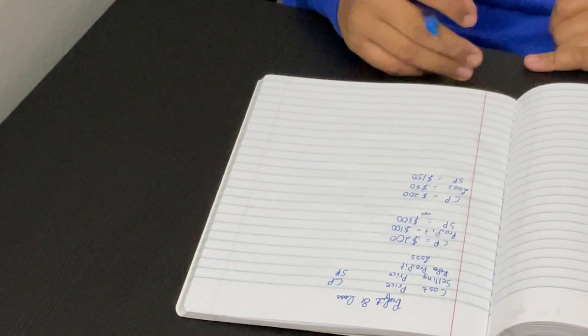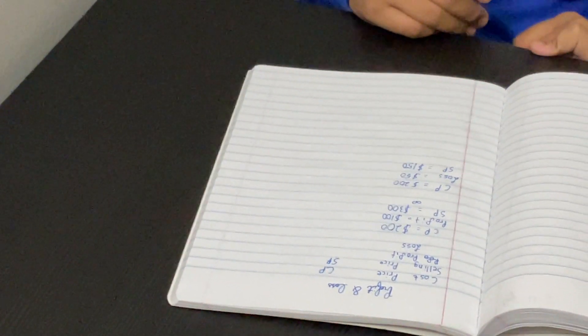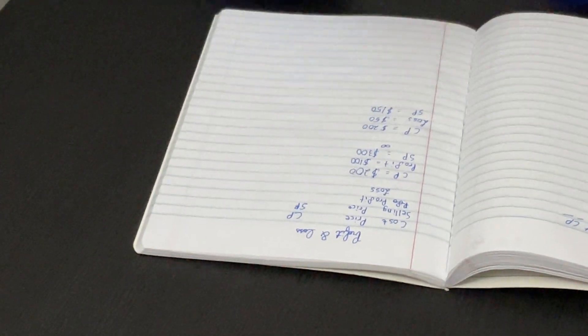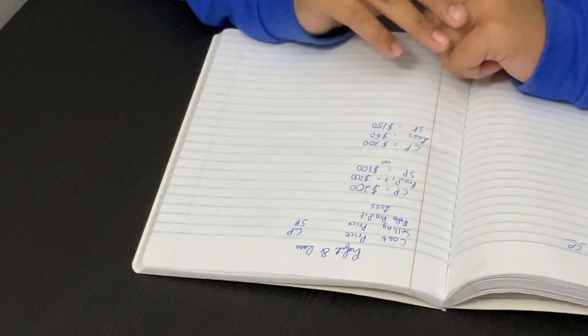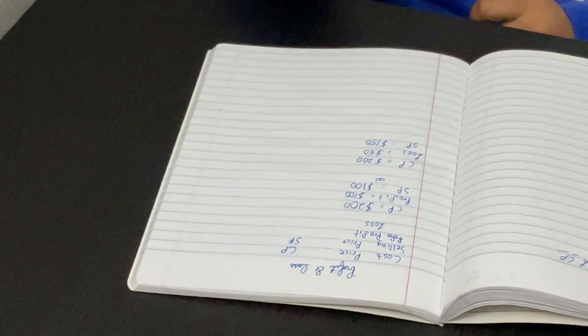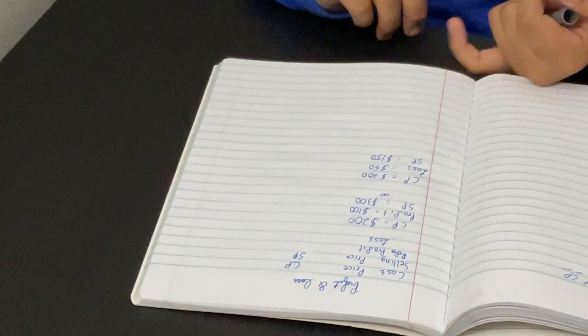The moral of the story here is when you're saying that profit is more, we add to the cost price, and when we have loss, we are subtracting it from the cost price. In the next video I'll upload, it's going to be about how to find the profit percentage and the loss percentage and how to solve those type of questions.